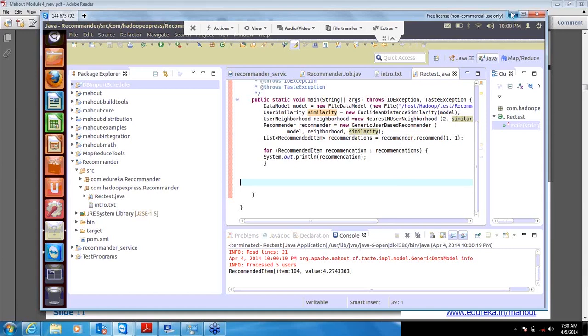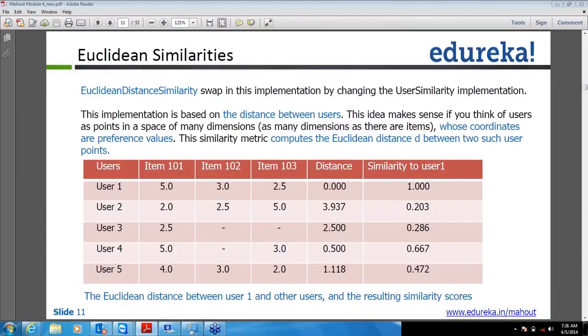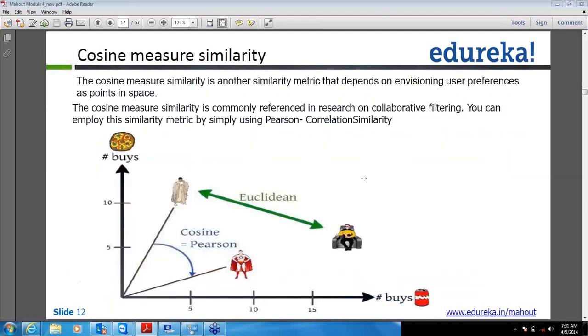Coming to cosine measure similarity, if you go to Mahout and try to find it, it's not there. You might ask, if it's not there then why are we discussing it? Actually, if you see the mathematical formula, it is related to Pearson only in how it is calculated.